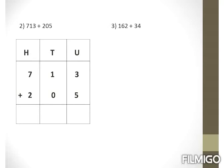Next example: 713 plus 205. Solving in the same manner, starting with units place first: 3 plus 5 gives us 8. Tens: 1 plus 0 — remember, any number plus 0 gives the number itself, so 1 plus 0 is 1. Hundreds: 7 plus 2 — count 2 more after 7: 8 and 9. So our answer is 918.